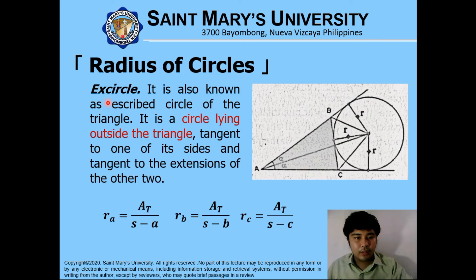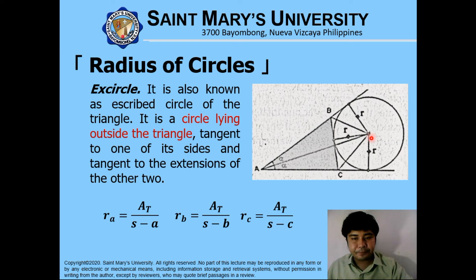An excircle, also known as the exscribed circle of a triangle, is a circle lying outside the triangle, which is tangent to one side and tangent to the extensions of the other two. The radius formulas are: RA equals area of the triangle over S minus A; RB equals area of the triangle over S minus B; RC equals area of the triangle over S minus C.